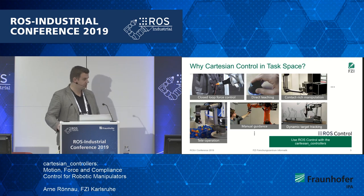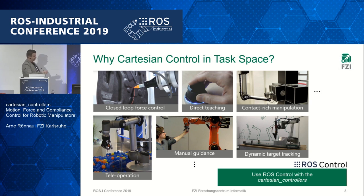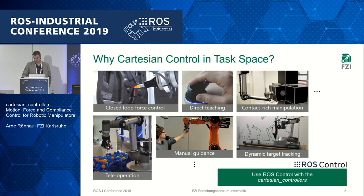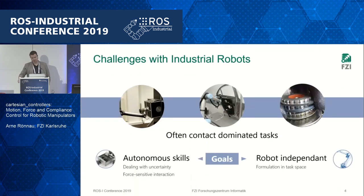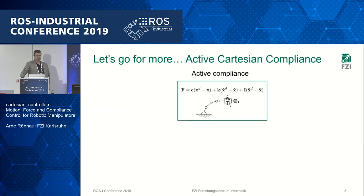Why do we need Cartesian control? You can use it for advanced closed-loop control, direct teaching, manual guidance — basically all these things get more intuitive in Cartesian space: dynamic target tracking, teleoperation. Most things we think about are in the Cartesian world, and using ROS control in Cartesian space has a lot of advantages. Looking at industrial applications, we often have contact-dominated tasks — mounting or assembling things — and we want to keep it robot-independent. So let's look not only at Cartesian space, but also at Cartesian compliance.